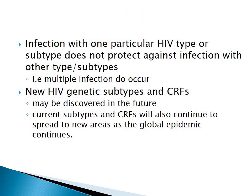Infection with one type or subtype of virus does not protect against infection with another type or subtype. An individual can have multiple infections, which contributes to the recombination we've discussed. New genetic subtypes and CRFs may be discovered in the future, and if you develop a vaccine for what is known today, something new may emerge that the vaccine will not cover.